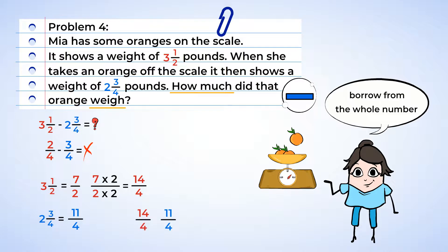Now having the same denominators, we can subtract. 14 minus 11 equals 3, and we keep the same denominator of 4, and our final answer is ¾. The orange weighed ¾ of a pound.